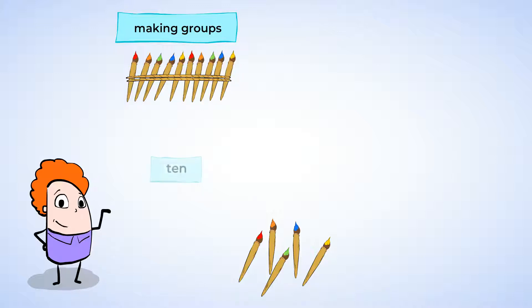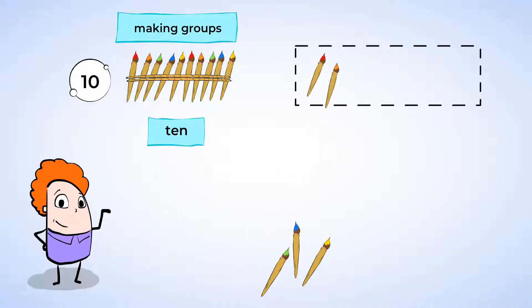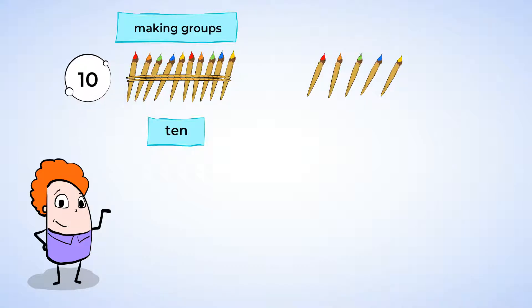This group is called a 10 because there are 10 objects in it. Do we have enough to make another 10? 1, 2, 3, 4, 5. No, we don't have enough to make another 10. A 10 must have exactly 10 things in it. Now these individual paintbrushes are called 1s. So we have 1 10 and 5 1s.